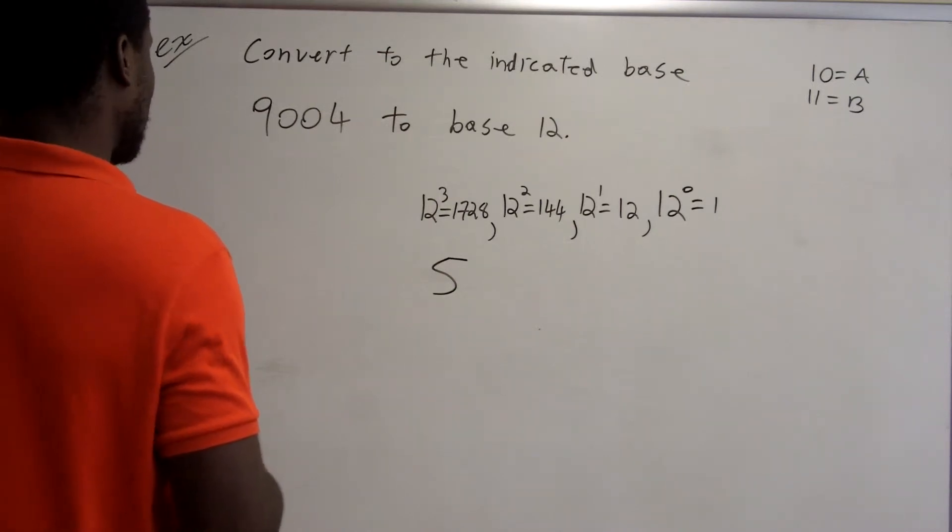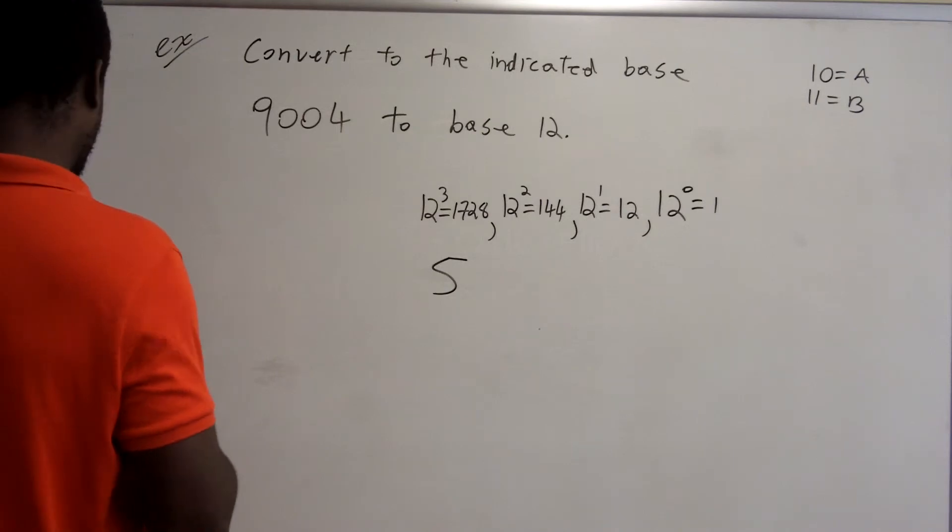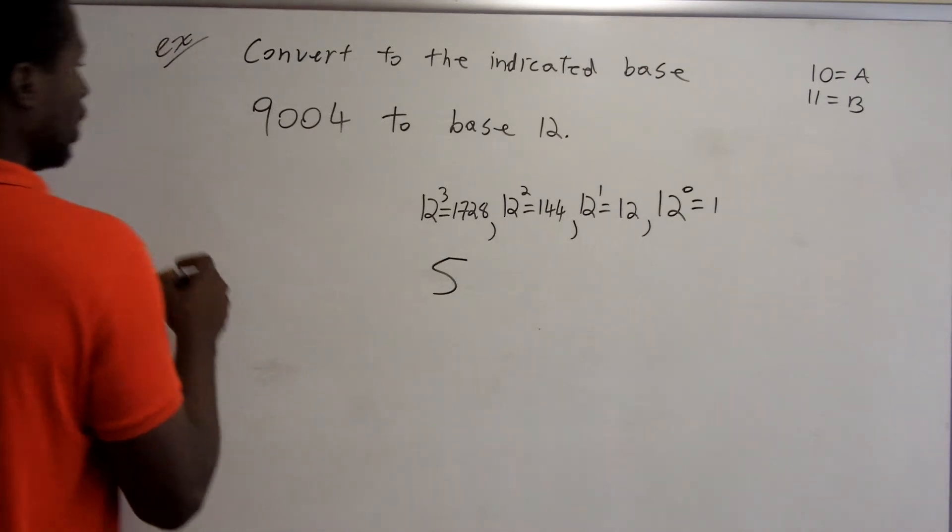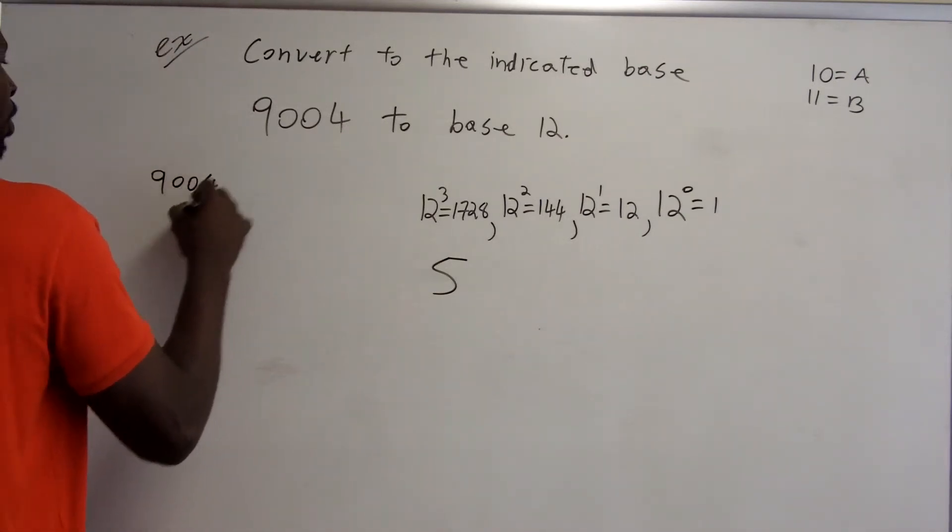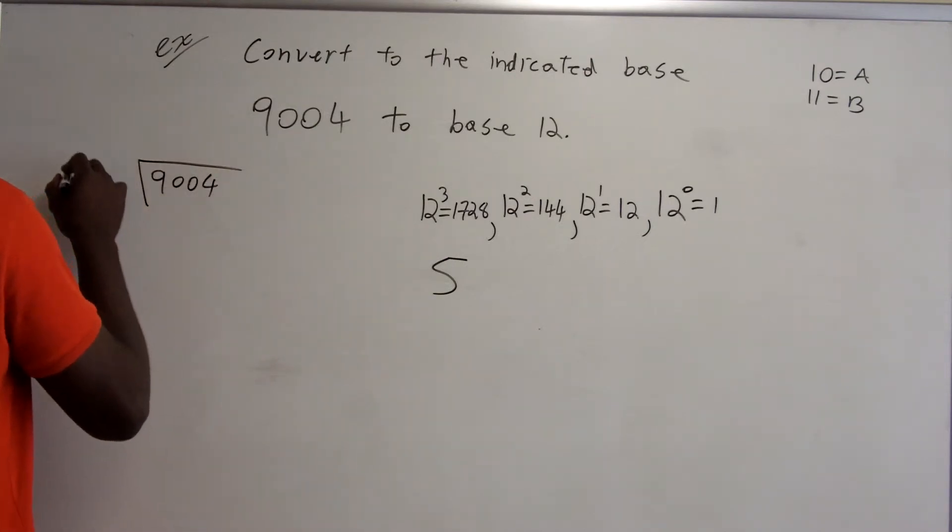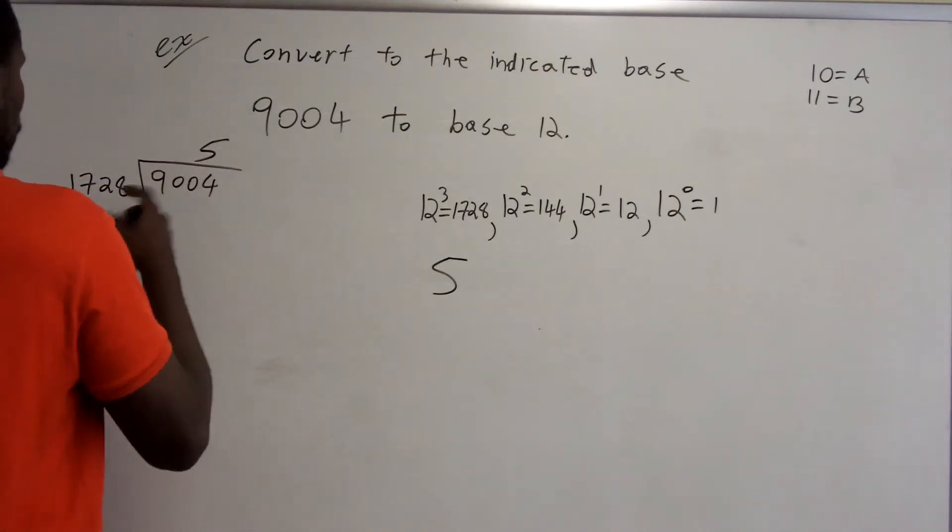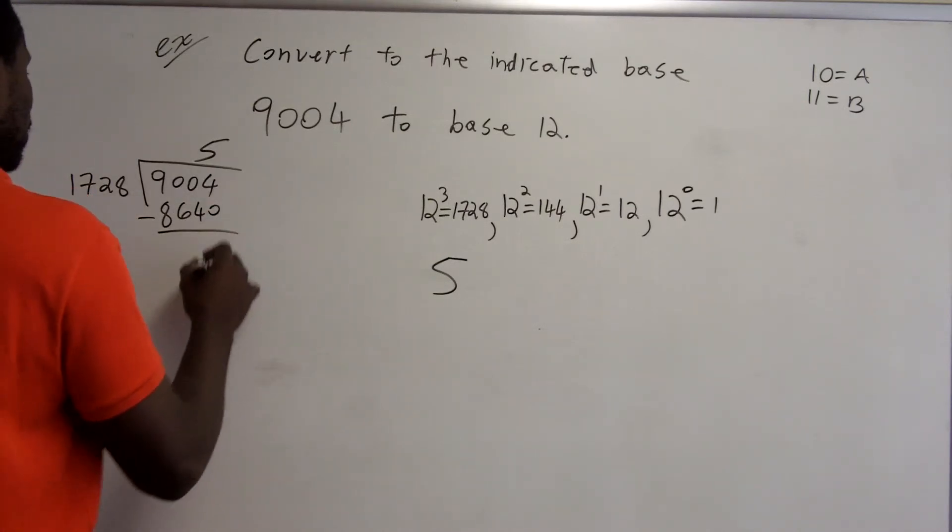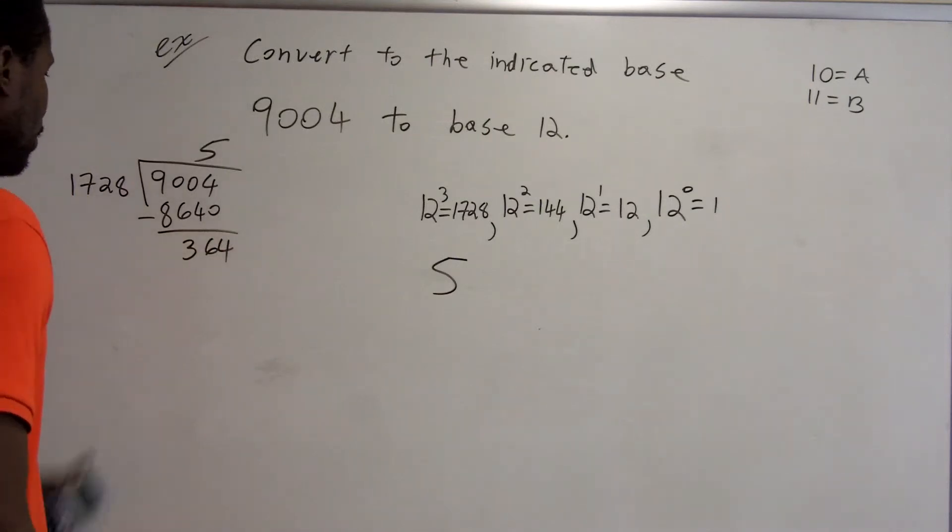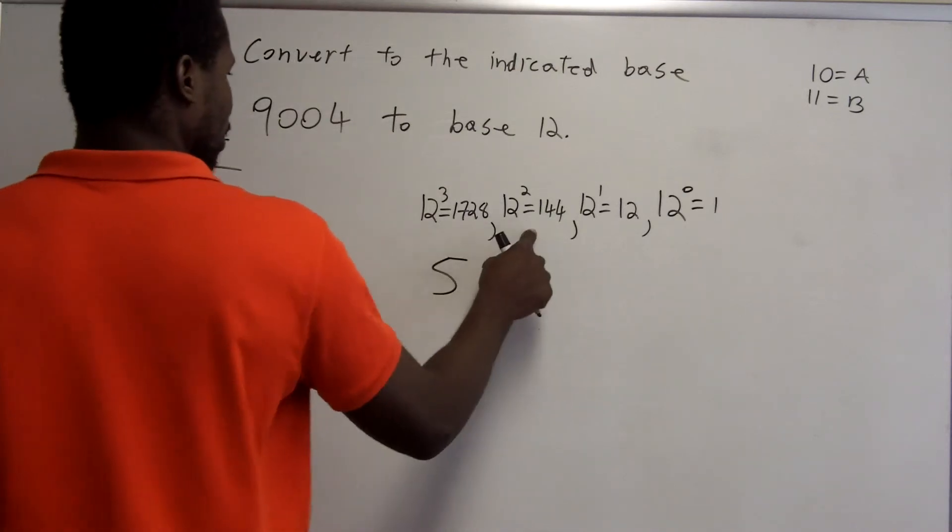And let's see. Those 5 groups represent 8,640. And when we subtract that from 9,004, we get 364. So it turns out that if I take 9,004, and I divide it by 1,728, the answer is 5, and when I do the multiplication here, I get 8,640. And this subtraction gives me a remainder of 364. So that's the remainder. That's the quotient.